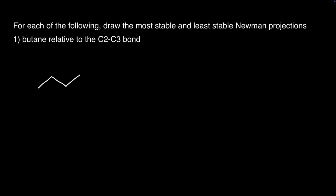Let's start with the first example. For each of the following, draw the most stable and least stable Newman projections — butane relative to the C2-C3 bond. First, we will draw the skeletal structure for butane and label the carbons in the parent chain.